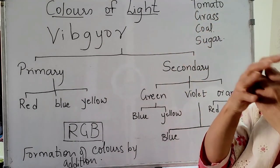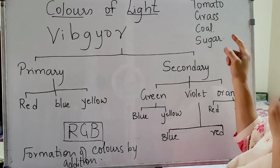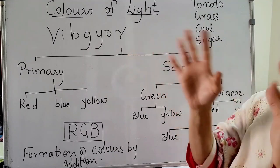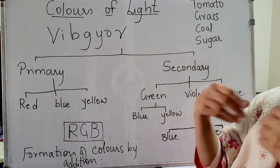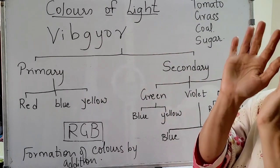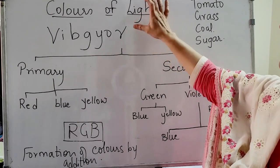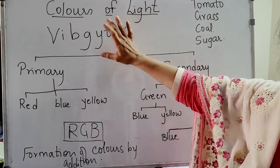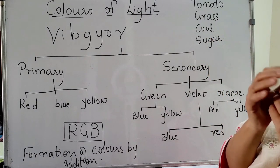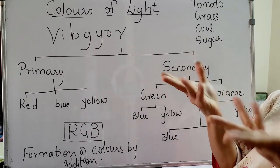Coal absorbs all colors, so you see it as black. Sugar and salt are white because they reflect all the colors — they combine and therefore you see them as white. We get light from sunlight, it has seven colors, and whatever colors an object absorbs you cannot see; what they reflect, you see.